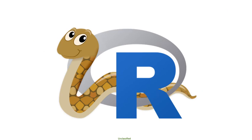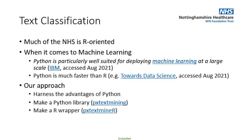I was pretty enthusiastic about Golem and I'm equally enthusiastic about Reticulate. In the NHS, much of our work is R-oriented. But when it comes to machine learning, there are demonstrably a lot of advantages to using Python over R. Python is particularly well-suited for deploying machine learning at large scales, and it tends to be much faster than R.